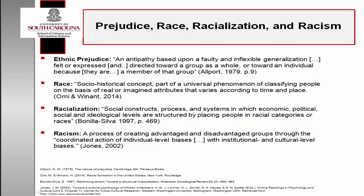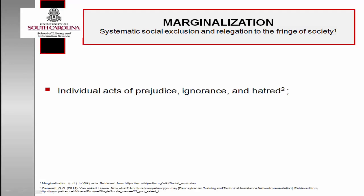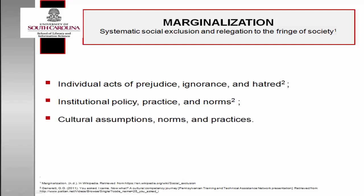Jones defined racism as a process of creating advantage or disadvantage groups through the coordinated action of individual level biases with institutional and cultural level biases. Gretchen Jenneret, associate professor and co-director of the Educational Leadership and Social Justice Center at Duquesne University, has delineated three levels of marginalization which include intentional and unintentional actions: the first level consists of individual acts of prejudice, ignorance, and hatred; the second level, institutional policy, practice, and norms; and the third, cultural assumptions, norms, and practices.